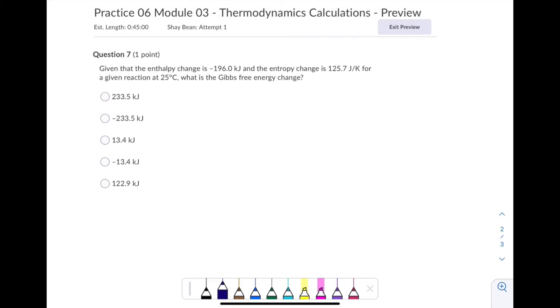Let's look at this problem from our thermodynamics module. This is from one of our practice sets. Given that the enthalpy change is, and there's your number, the entropy change is for a given reaction at 25 degrees Celsius, what is the Gibbs free energy change?